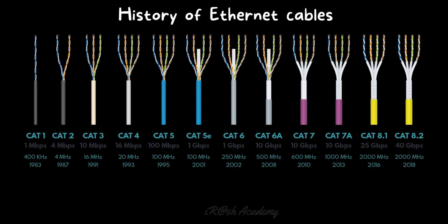Ethernet cables are available in different formats. Let's see the history of ethernet cables. You can see different types of ethernet cable on screen, introduced in different years, starting from Cat 1 cable to Cat 8.2 cable. The first cable was Cat 1 with 1 Mbps speed, introduced in 1983. Then Cat 2 came up with 4 Mbps speed in 1987. Cat 3 came in 1991 with 10 Mbps speed. Cat 4 was introduced in 1993 with 16 Mbps speed. Cat 5 was introduced with 100 Mbps speed in 1995.